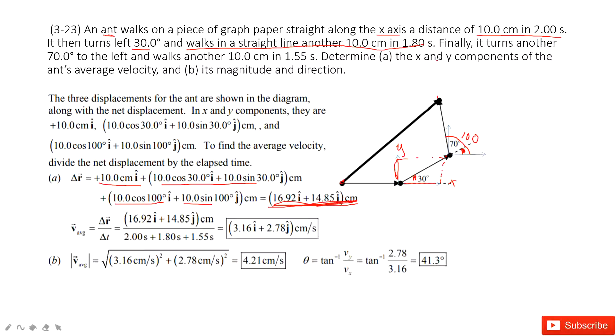Now we need to find the average velocity. The average velocity is the displacement divided by time taken. We have the displacement. Next, we need to find the time taken.